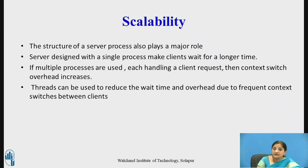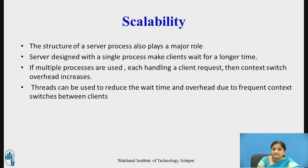The structure of the server process plays a major role in scalability. A server designed with a single process can handle only one client request at a time, making other clients wait longer. Using multiple processes — each handling a particular client request — increases latency and overhead due to context switches, since processes are heavyweight. Instead, lightweight threads should be used. Threads can reduce wait time and overhead due to frequent context switches between clients.